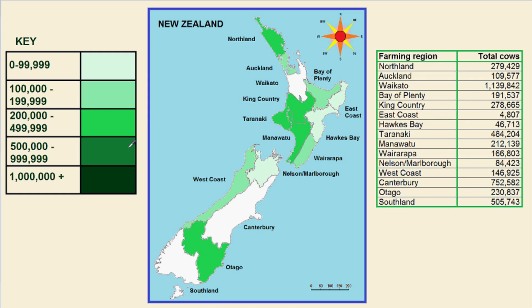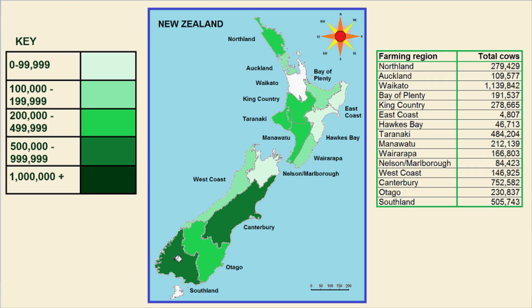Then I will shade in the regions between 500,000 and 1,000,000 stock. These regions include Canterbury and Southland.